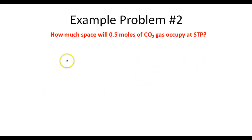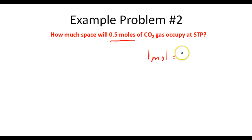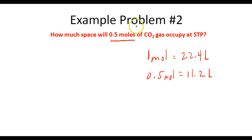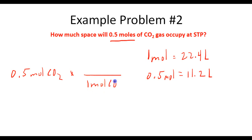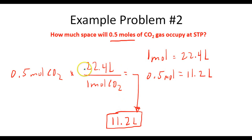Let's take a look at another example. How much space will 0.5 moles of CO2 gas occupy at STP? We have half a mole of gas at STP, and we know one mole occupies 22.4 liters, so we should get half that value — 11.2 liters. If we've got 0.5 moles of CO2 gas and multiply by 22.4 liters per one mole, we end up with 11.2 liters. So half a mole is going to occupy 11.2 liters.